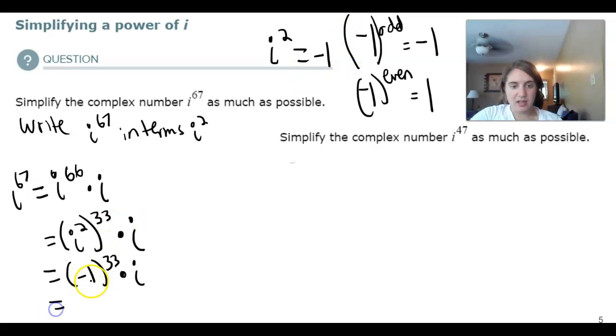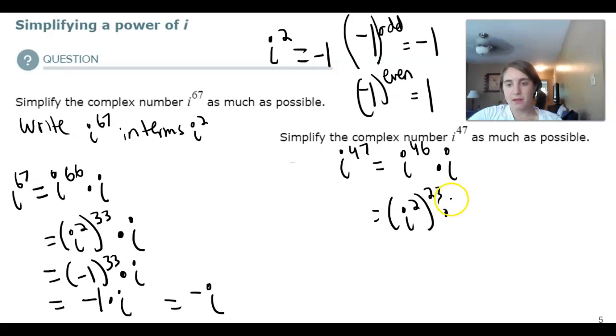So, here we have negative 1 to the 33 times i. That's going to be negative 1 times i or just negative i. i to the 47, I can write that as i to the 46 times i. Now, I want to write this in terms of i squared. So, that's negative 1 to the 23 times i. We're once again going to get a negative 1 times i or just negative i.